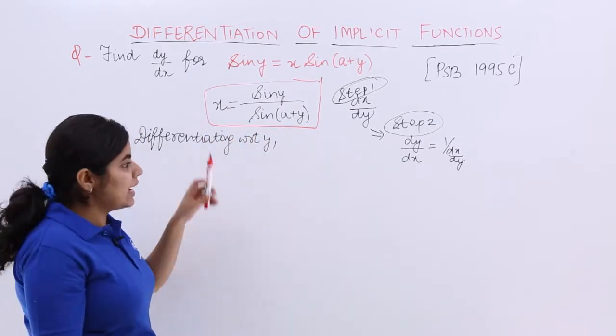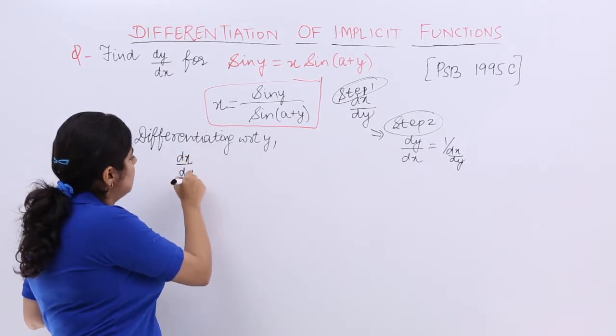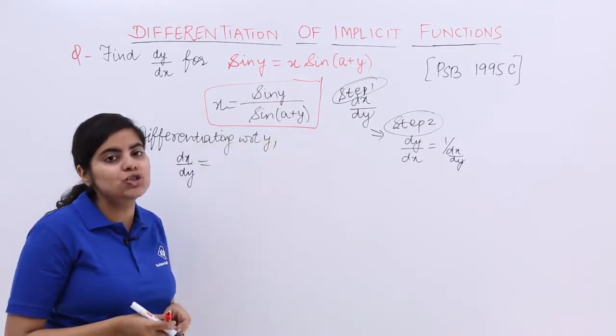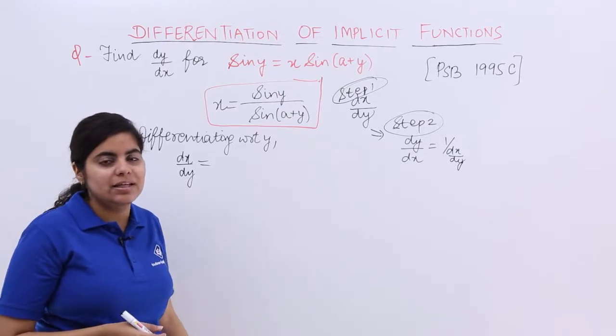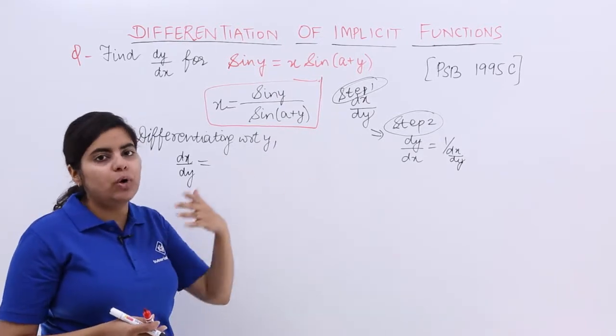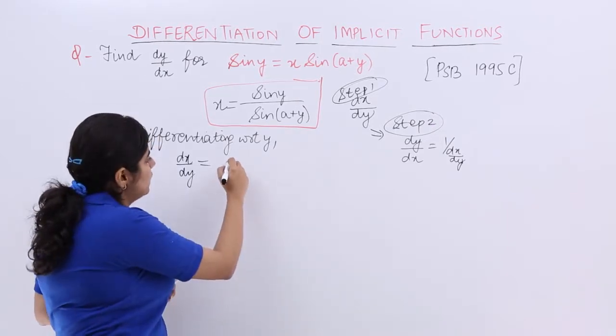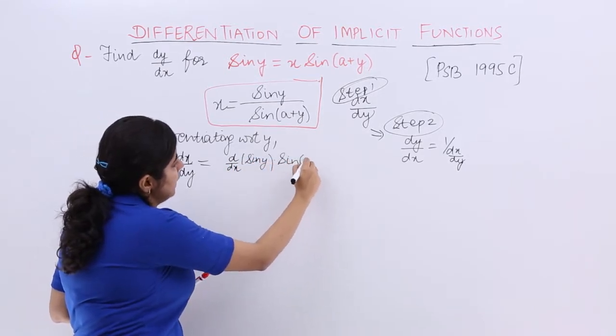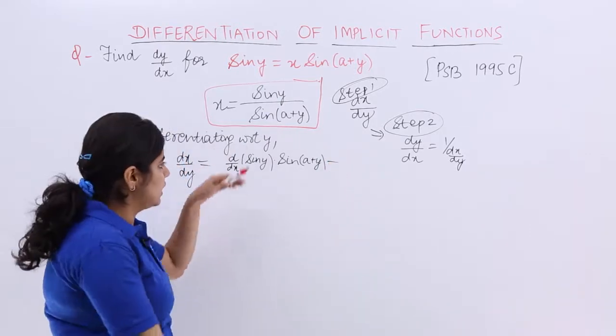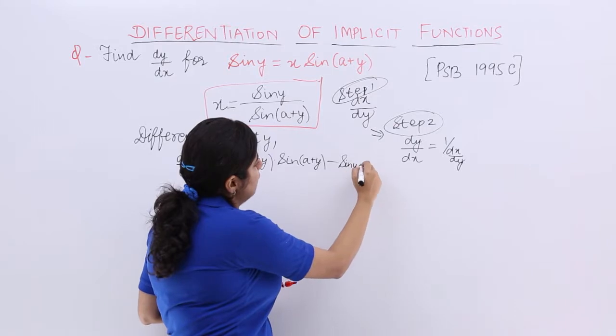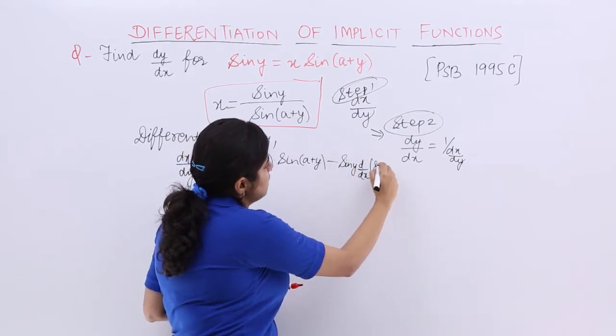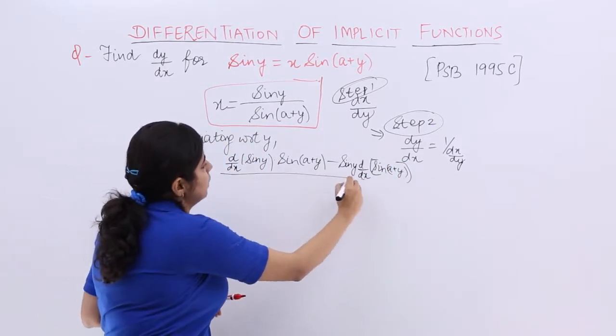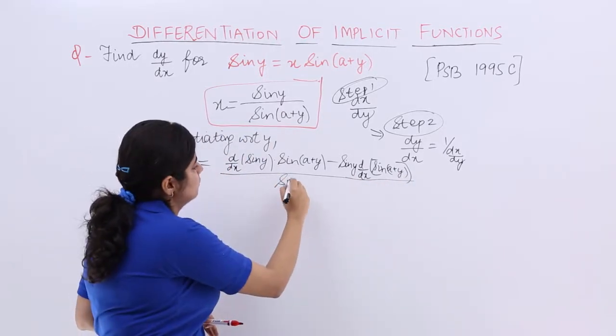Let's start. This time we'll be differentiating with respect to y. Now x is there, its differentiation with respect to y is dx/dy. This is a quotient rule problem. Numerator is there, denominator is there. What is the quotient rule? If u and v are in the form u upon v, it becomes u' v minus u v' upon v square.